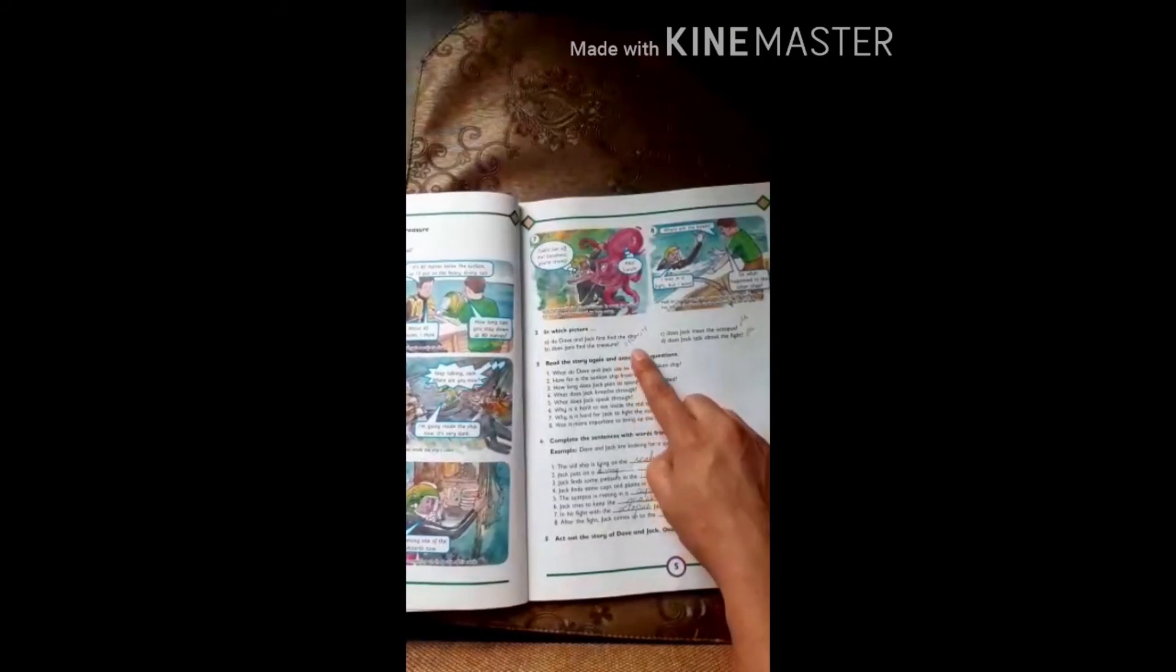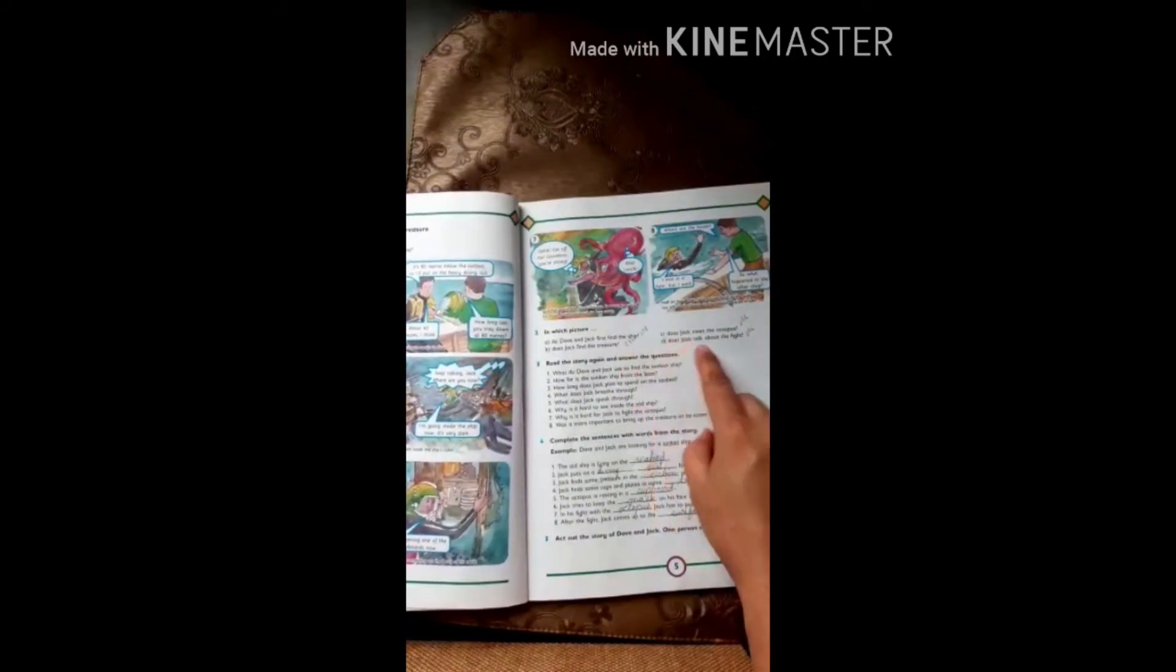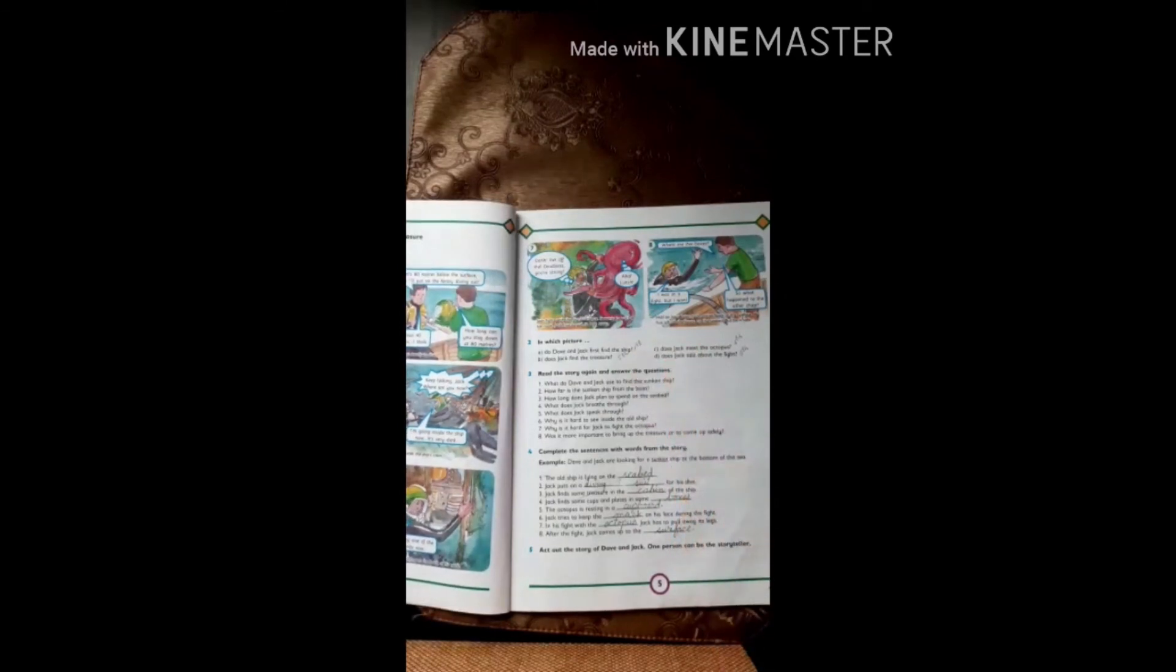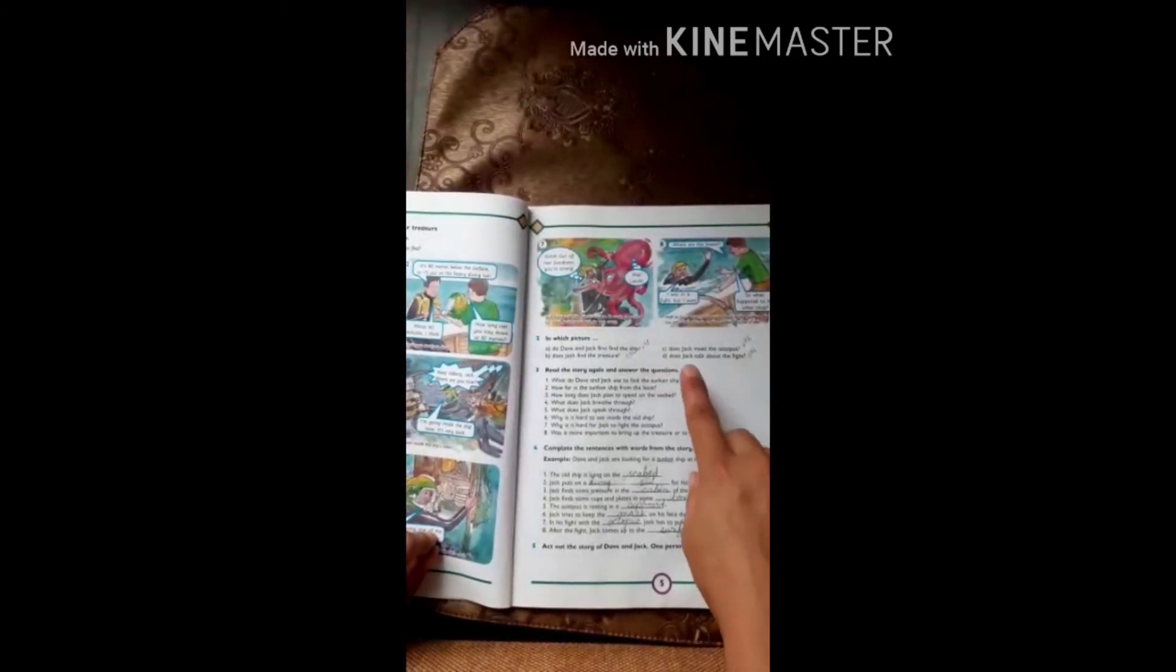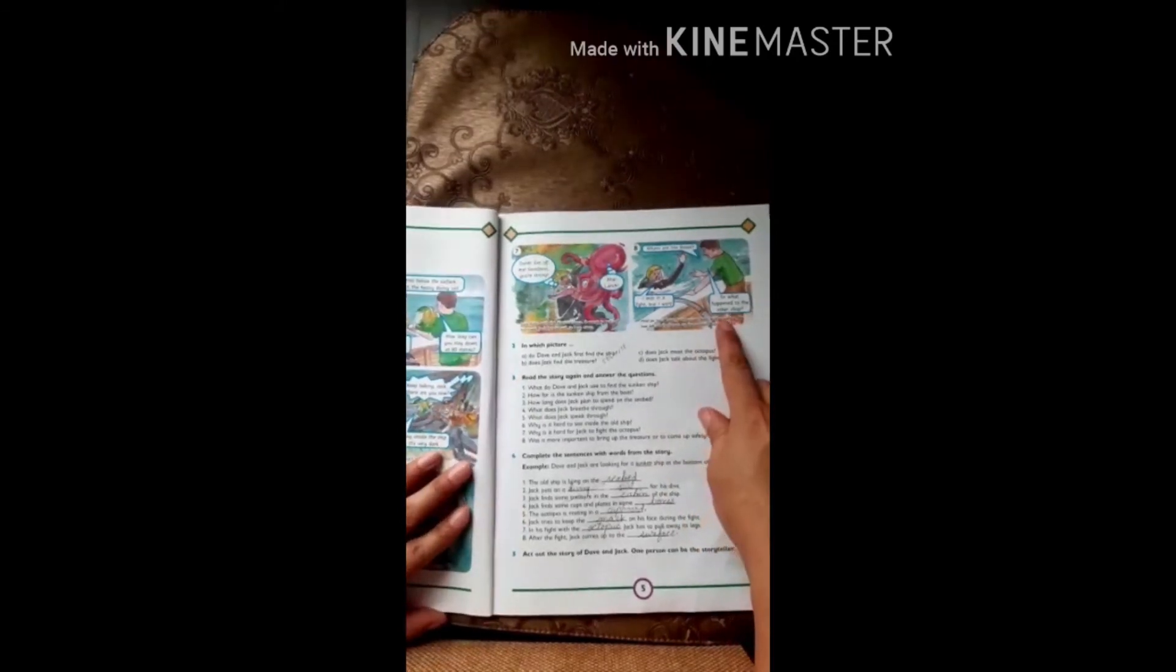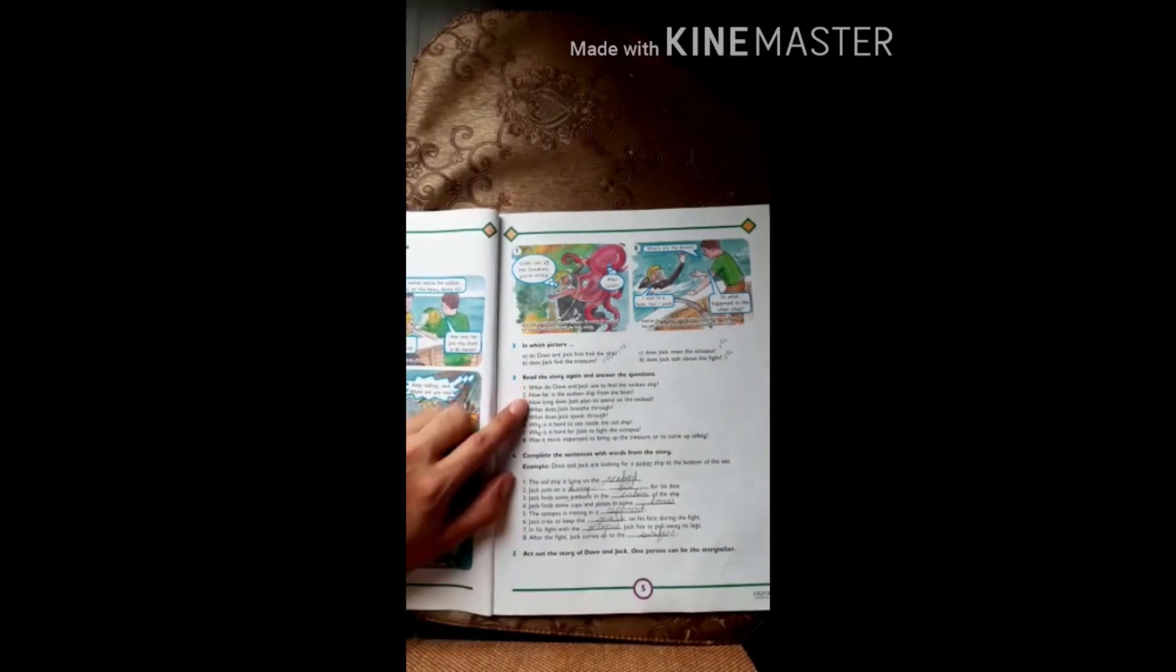Next, does Jack meet the octopus? The octopus came in picture number six because he feels that there is something. Where does Jack talk about the fight? Last picture, when he came back, Dave asked where are the boxes, then he replied I was in the fight but I won. So write number eight.